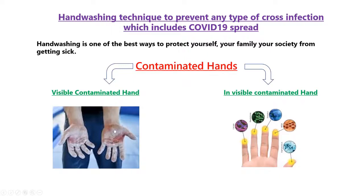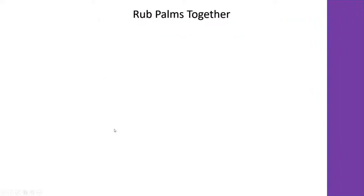For visibly contaminated hands we can use water and soap. There are six steps — if we follow these six steps, the complete area of our hand will be covered, making sure that we are cleaning all parts. This way the maximum number of organisms can be removed from our hands. The first step is to rub the palms together.